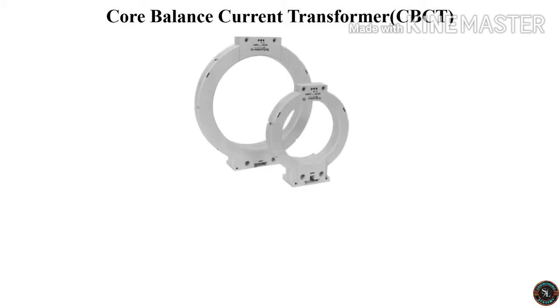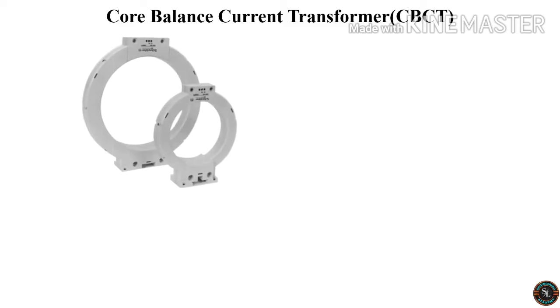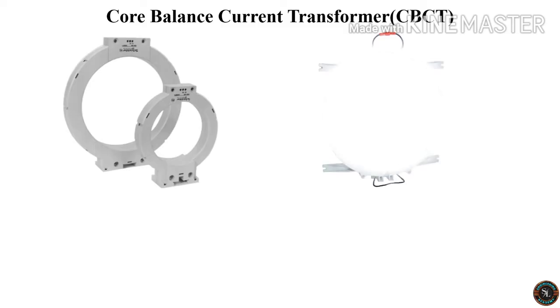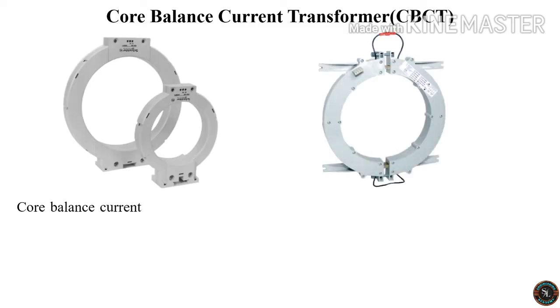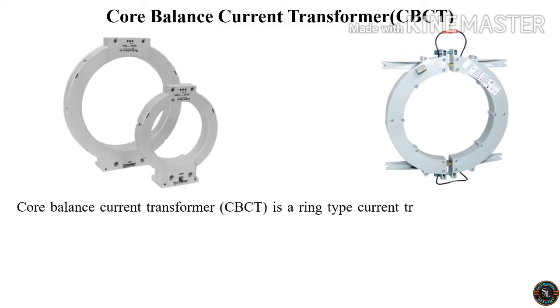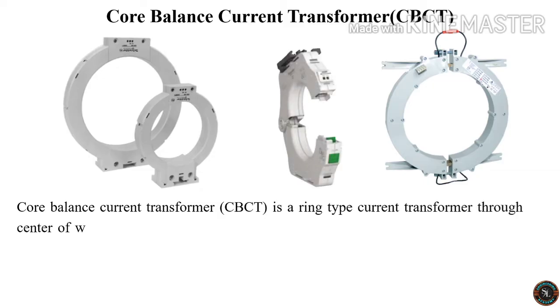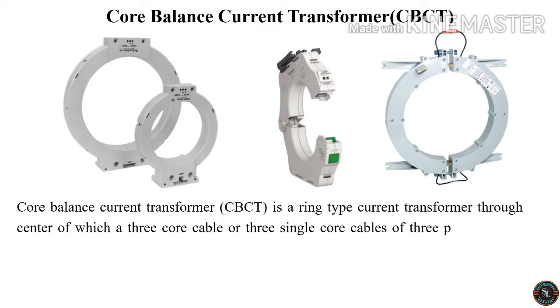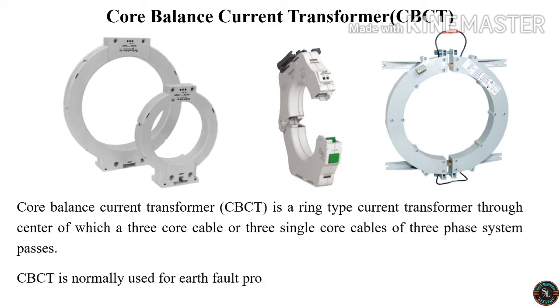Before explaining the circuit diagram of ELR, we need some idea about the core balance current transformer, or CBCT. CBCT is a ring type current transformer through the center of which a three core cable or three single core cables of a three phase system passes. CBCT is normally used for earth fault protection for low and medium voltage systems.